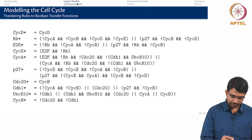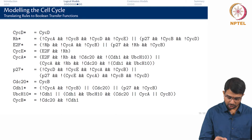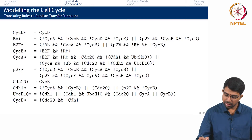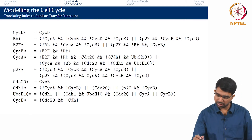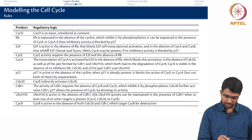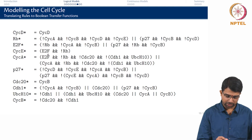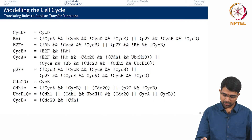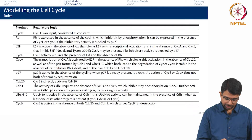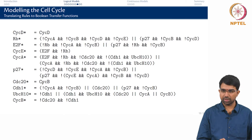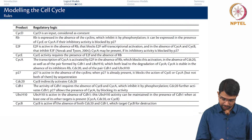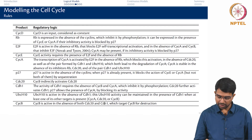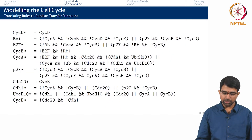So CycD* equals CycD. E2F* is not RB and not CycA and not CycB, or P27 and not RB and not CycB. Cyclin E requires the presence of E2F and the absence of RB. Cdc20 is indirectly activated by CycB, and CycB should not have both Cdc20 and Cdh1. So CycB is active in the absence of both Cdc20 and Cdh1. You set up rules like these.